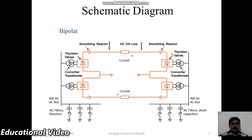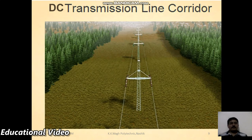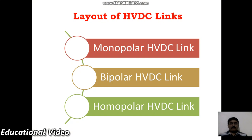Looking at a pictorial comparison, for an AC transmission line corridor the space required is more, while for HVDC the space required is very less.